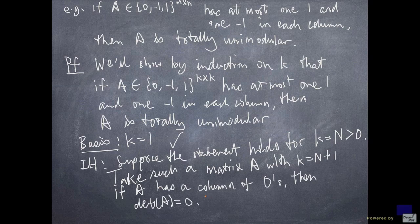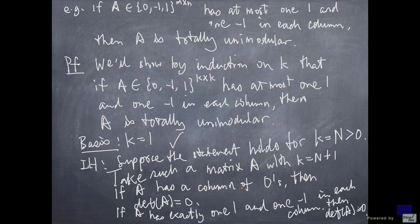Now, if every column has exactly one 1, and one minus 1, then its determinant is also 0 because if you add up all the rows, you get the 0 row. The remaining case to consider is there is a column with exactly one non-zero entry.